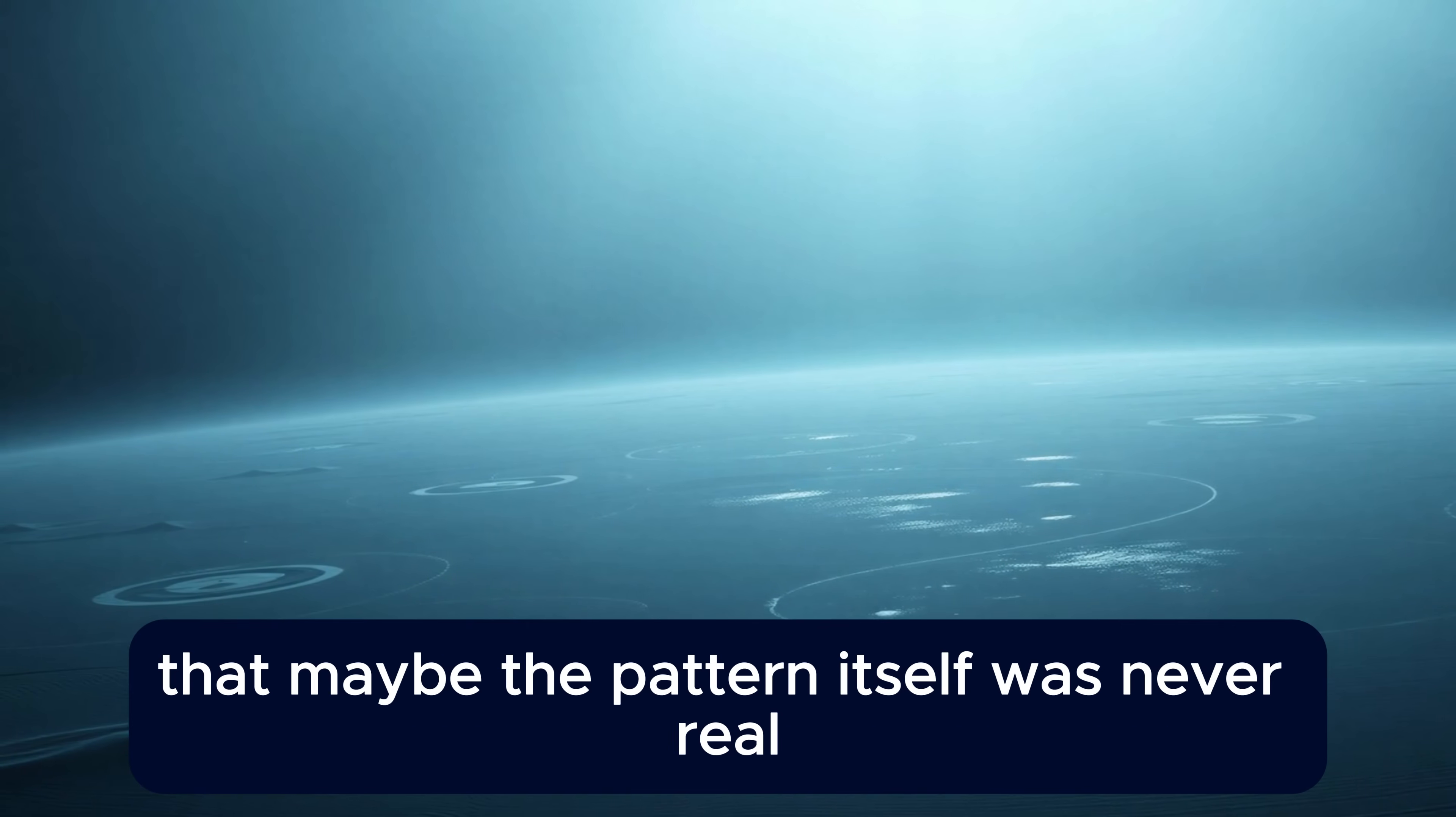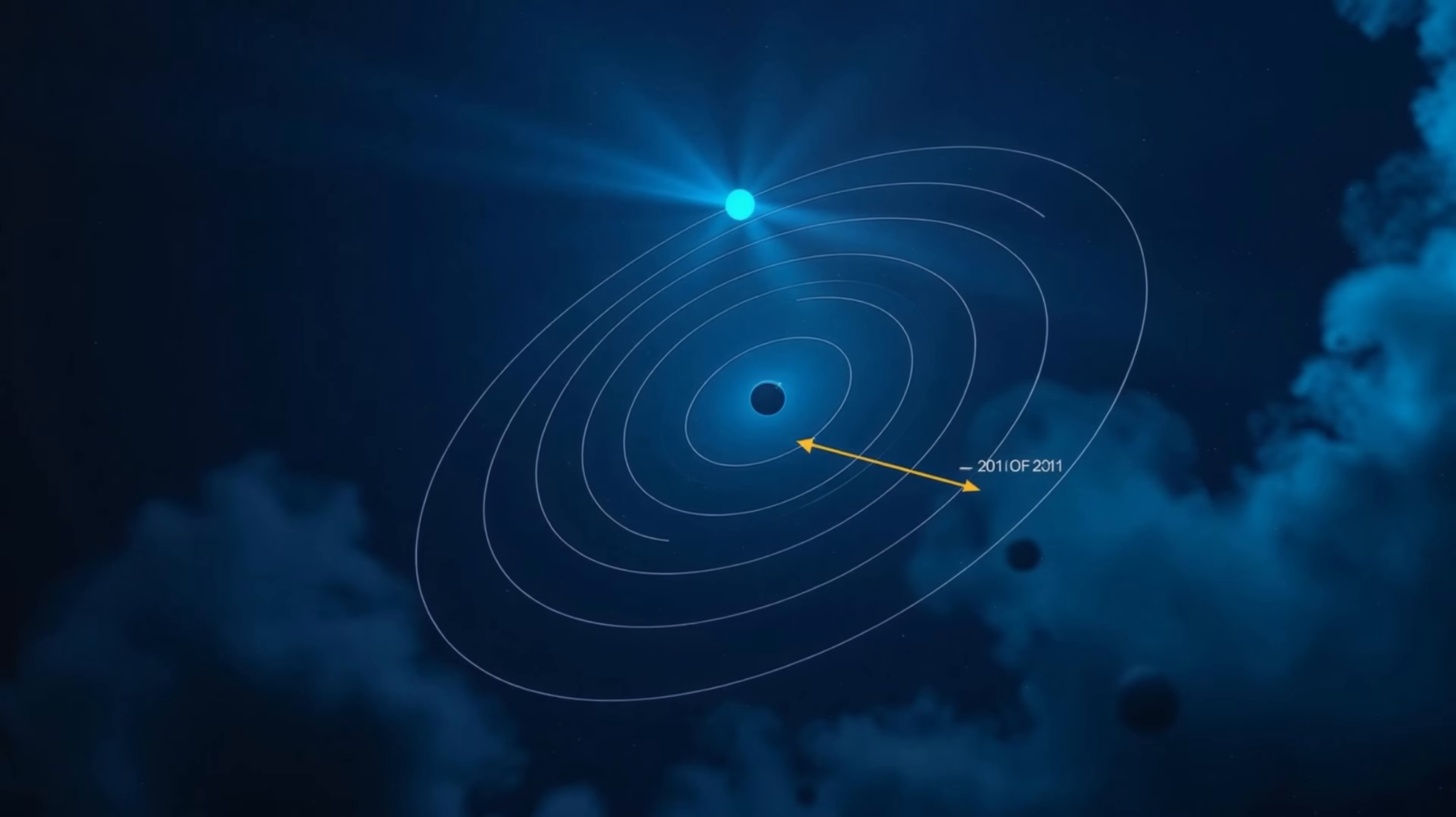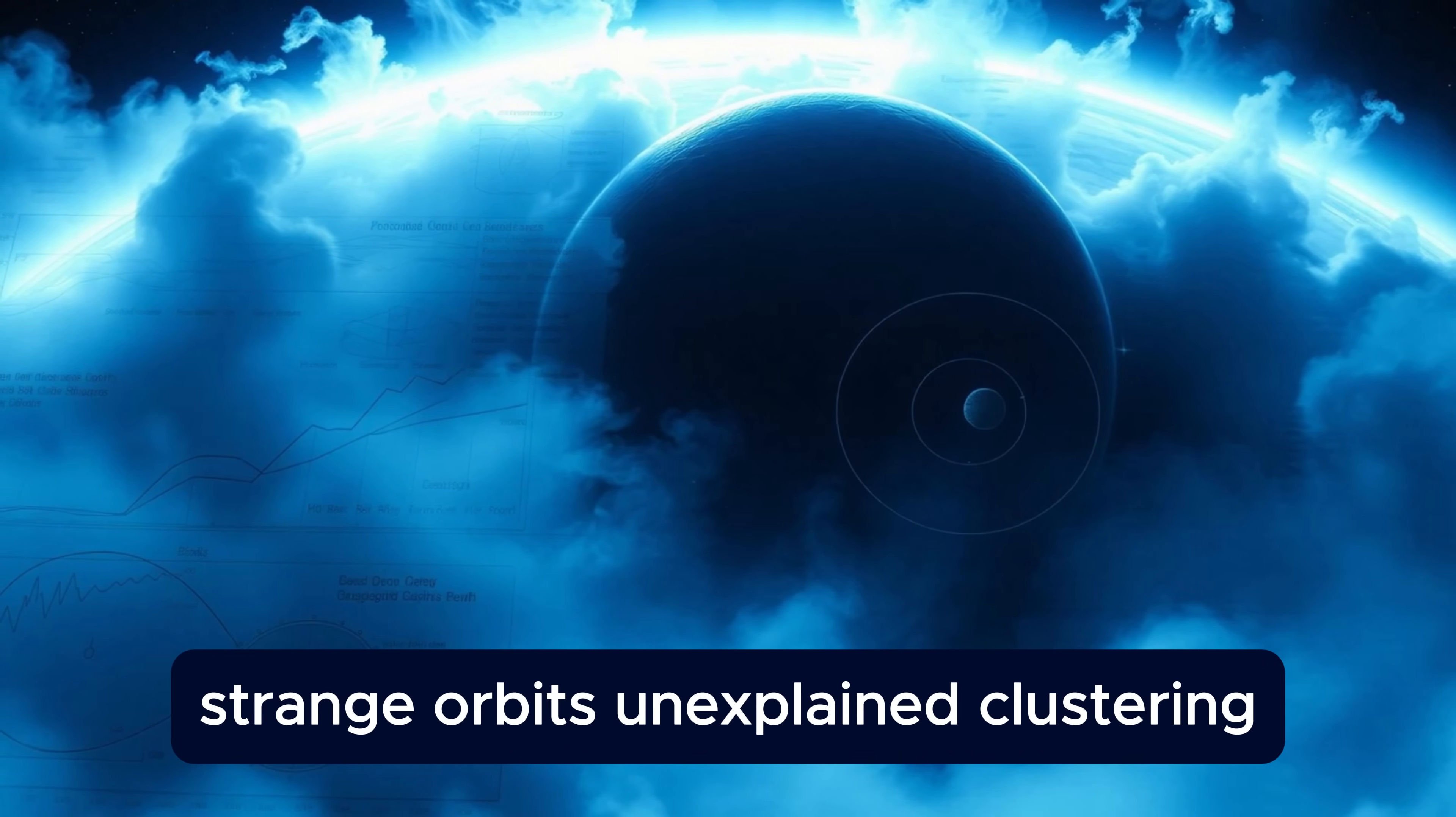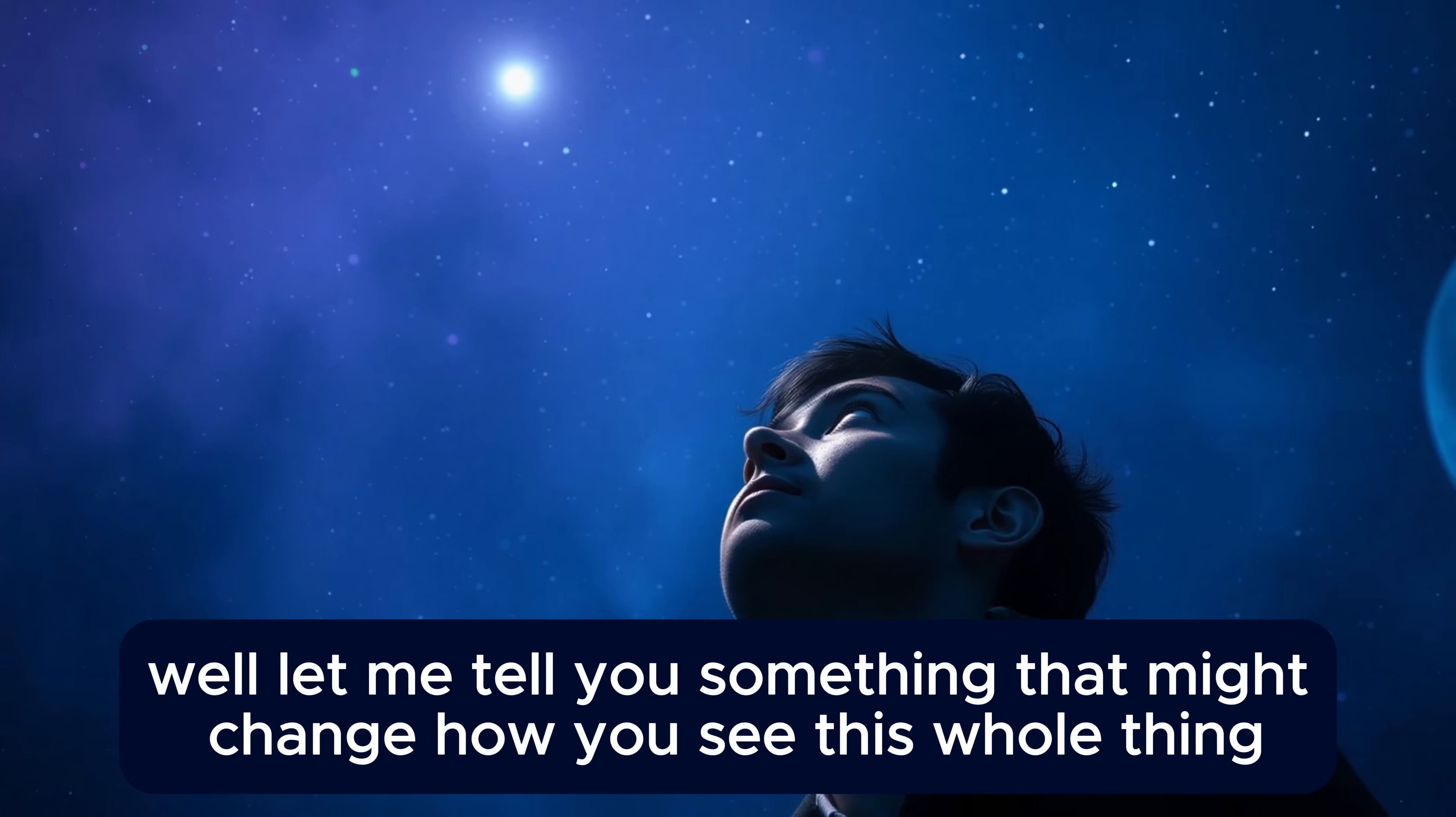And that raised an uncomfortable question. If Planet 9 is supposed to explain the clustering, but we keep finding objects that don't fit the pattern, does that weaken the whole case? Some researchers started suggesting that maybe the pattern itself was never real. Maybe it's just observational bias. Maybe these are just random orbits caused by billions of years of chaos, and we're seeing patterns where none exist. And this is exactly where the mystery sits right now. We have compelling evidence. Strange orbits. Unexplained clustering. Mathematical models that work. But we also have objects that don't fit. Searches that come up empty. And a growing list of alternative explanations. So what's the truth? Is Planet 9 real? Or have we been chasing a ghost this whole time?